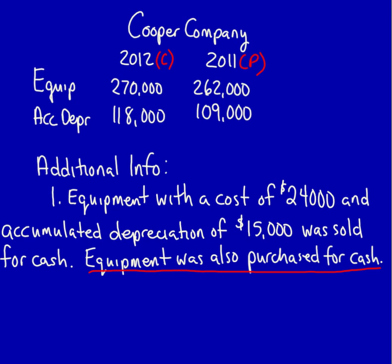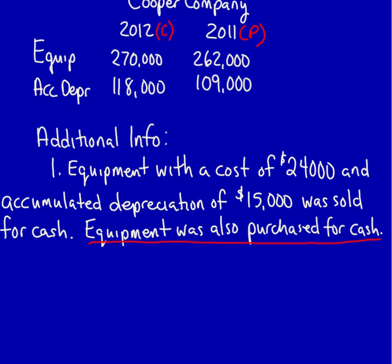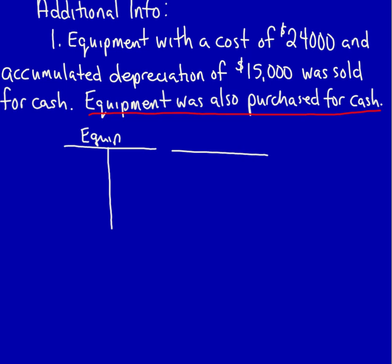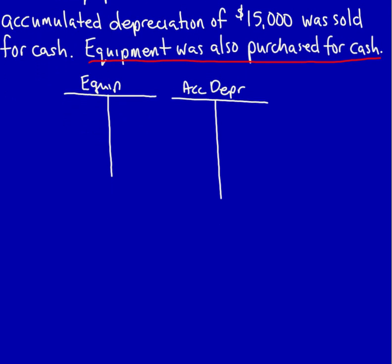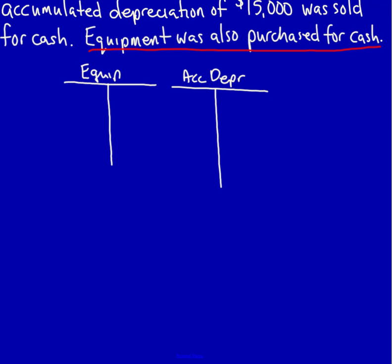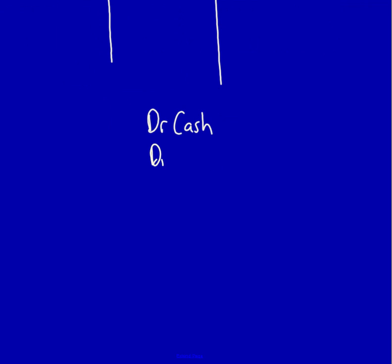Let's go through the steps in the process. We already know that a T-account proof is necessary, so we're going to provide a blank T-account — one for equipment, one for accumulated depreciation. We also need to have the sale entry: a debit to cash, a debit to accumulated depreciation, a credit to equipment, and we don't yet know whether there will be a gain or loss on sale, so we'll leave that blank.